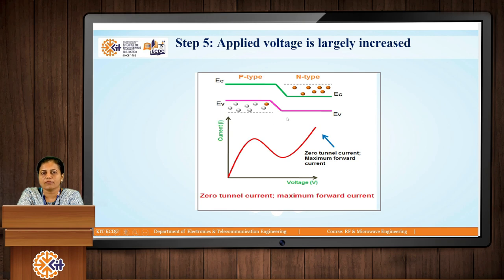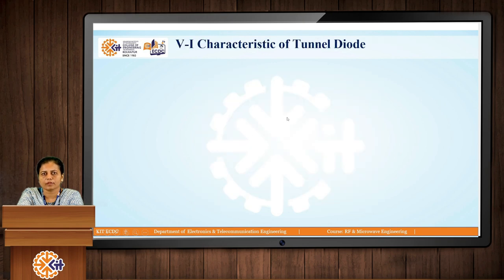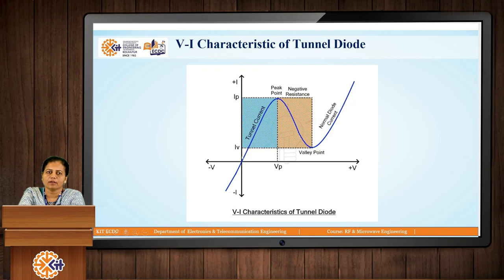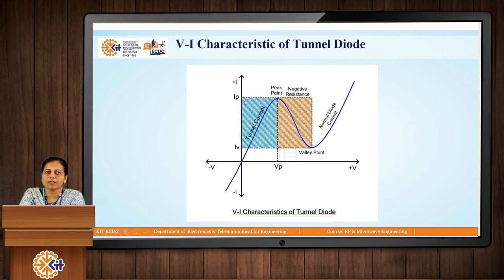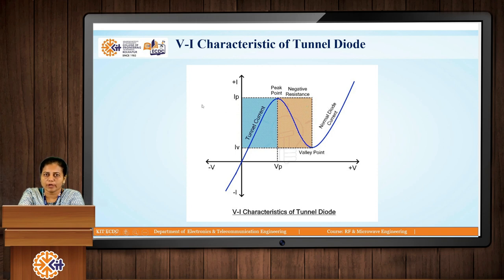This is the VI characteristic of the Tunnel Diode. Initially, a tunnel current flows for voltages less than the built-in voltage. This tunnel current increases up to a peak point, after which it starts to decrease. After the valley point, the diode acts as an ordinary P-N Junction Diode and we get a forward bias current. From the peak point to the valley point, the property observed is the negative resistance property — as voltage increases, current decreases.